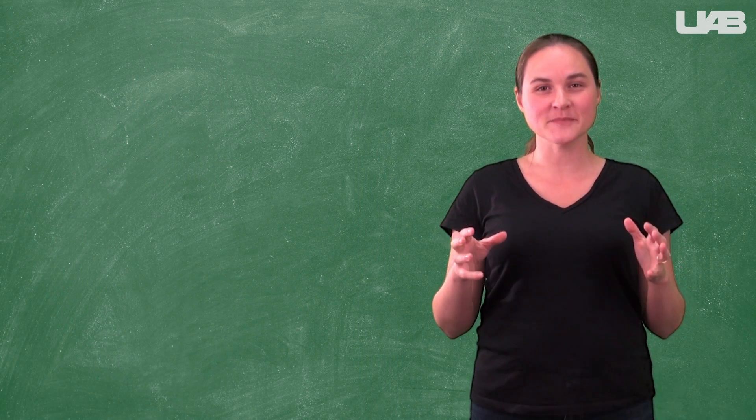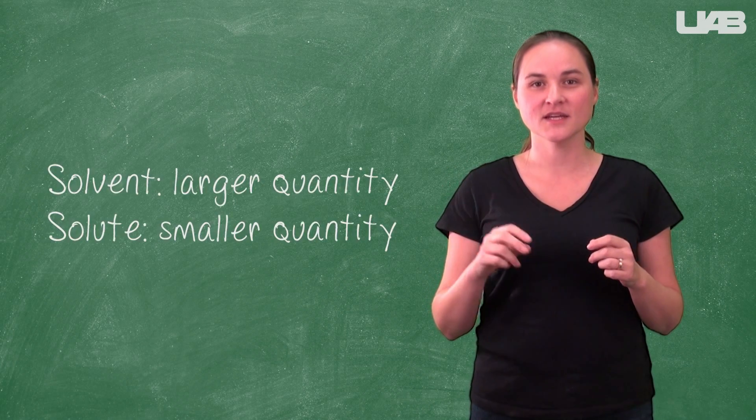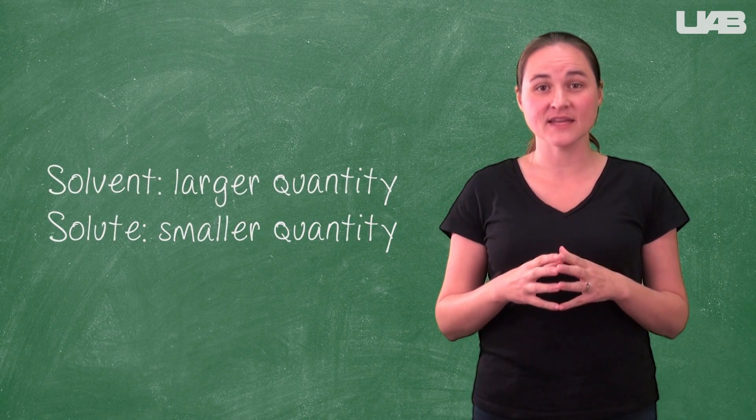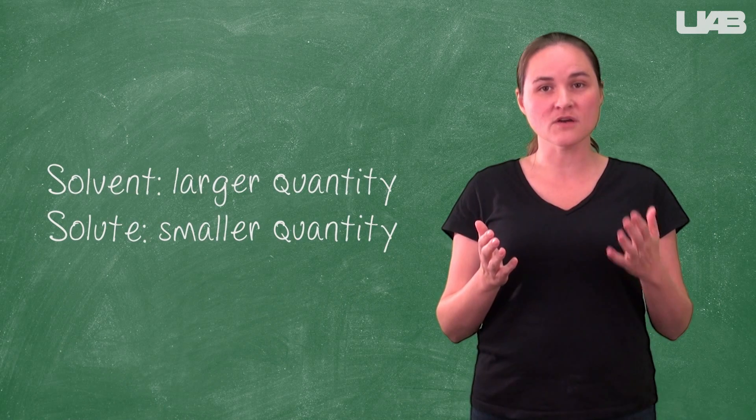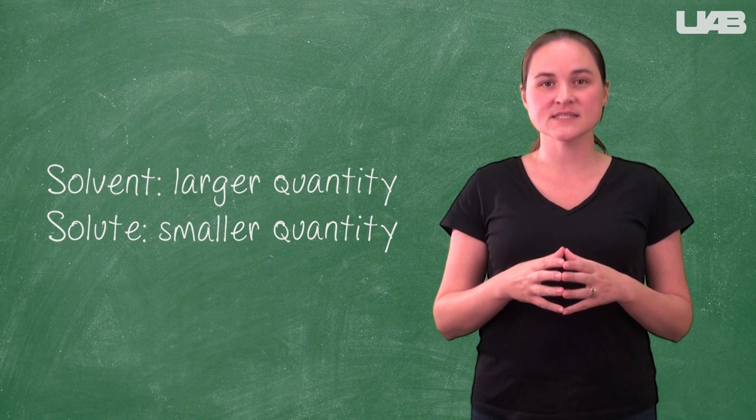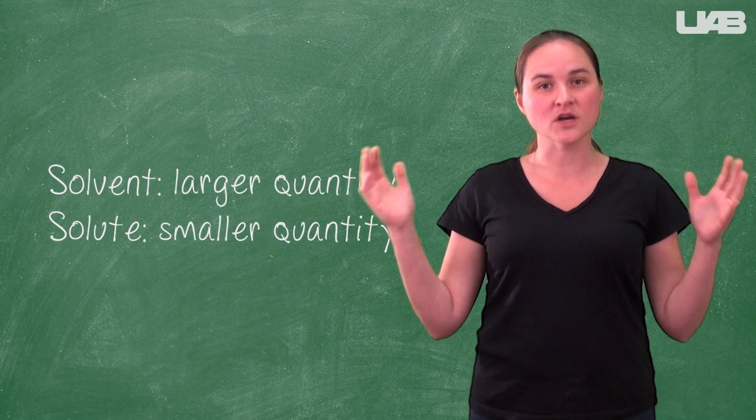A simple solution is made by mixing two chemicals together. The two chemicals are classified as either a solute or a solvent. The solvent is typically the chemical that is present in the largest quantity.